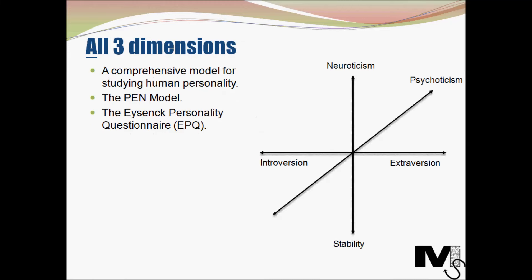Now combining all three dimensions, he concluded that we have a comprehensive model for studying human personality types. He called this the PEN model, naming it after the dimensions. His questionnaire was modified to incorporate the third dimension, and the final questionnaire was then called the Eysenck Personality Questionnaire, or EPQ. He concluded that he had found a way to gauge a person's personality, and believed that the overall influence on a person's personality comes from where he was born, with external influences playing only a limited role.